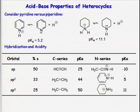In this webcast, we're going to discuss different acid-base properties of heterocyclic systems. In this example on this slide, we're going to compare the two conjugate acids of structurally similar molecules. On the left, we have the conjugate acid of pyridine with a pKa of 5.2, and on the right, we have the conjugate acid of piperidine with a pKa of 11.1.